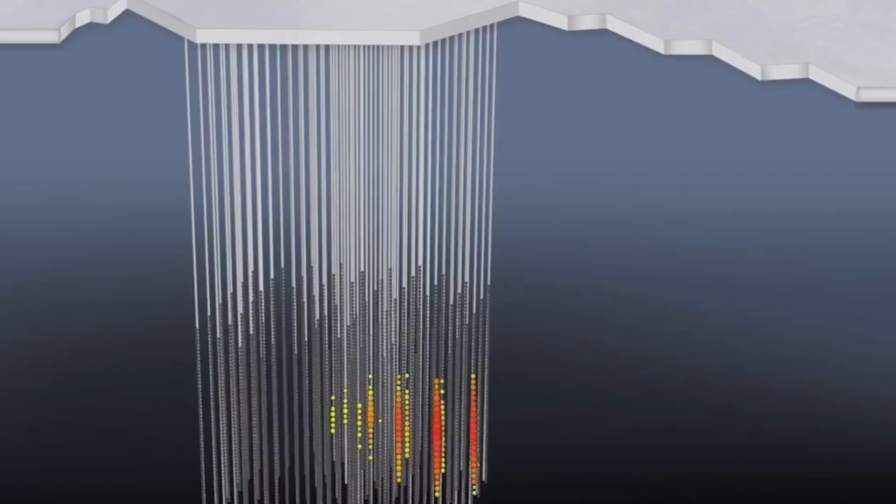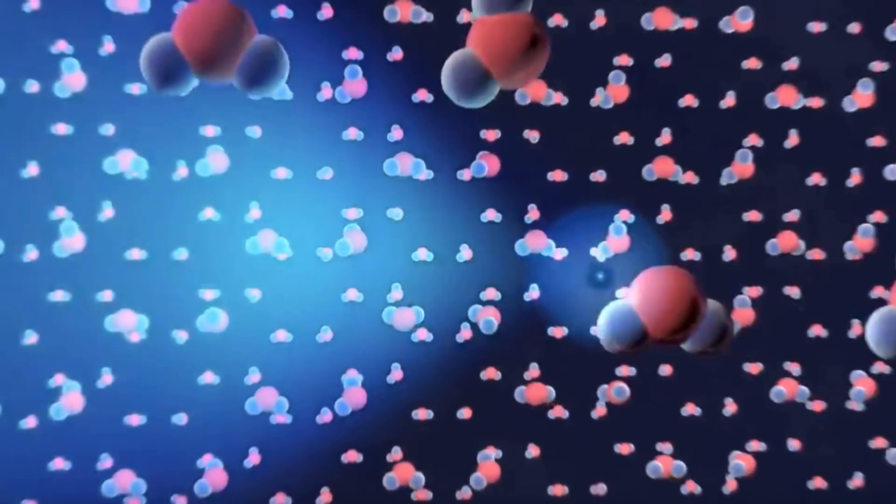And as this particle is producing Cherenkov radiation, all of these sensors detect it and then create a kind of three-dimensional map of where this particle may have actually come from, which is where it gets really interesting. You can kind of see the line forming here.